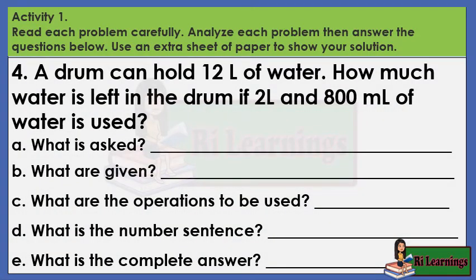4. A drum can hold 12 liters of water. How much water is left in the drum if 2 liters and 800 milliliters of water is used?